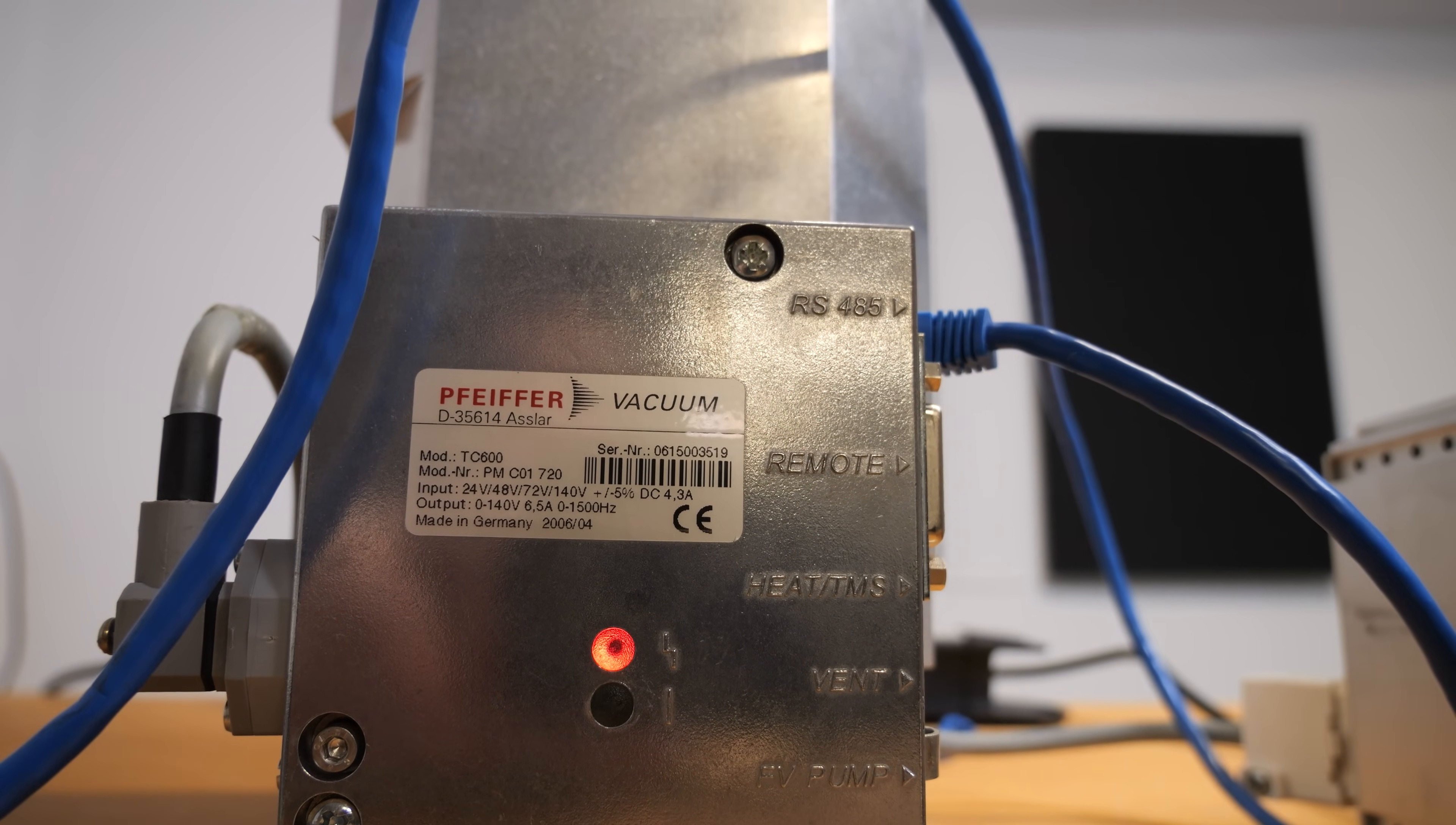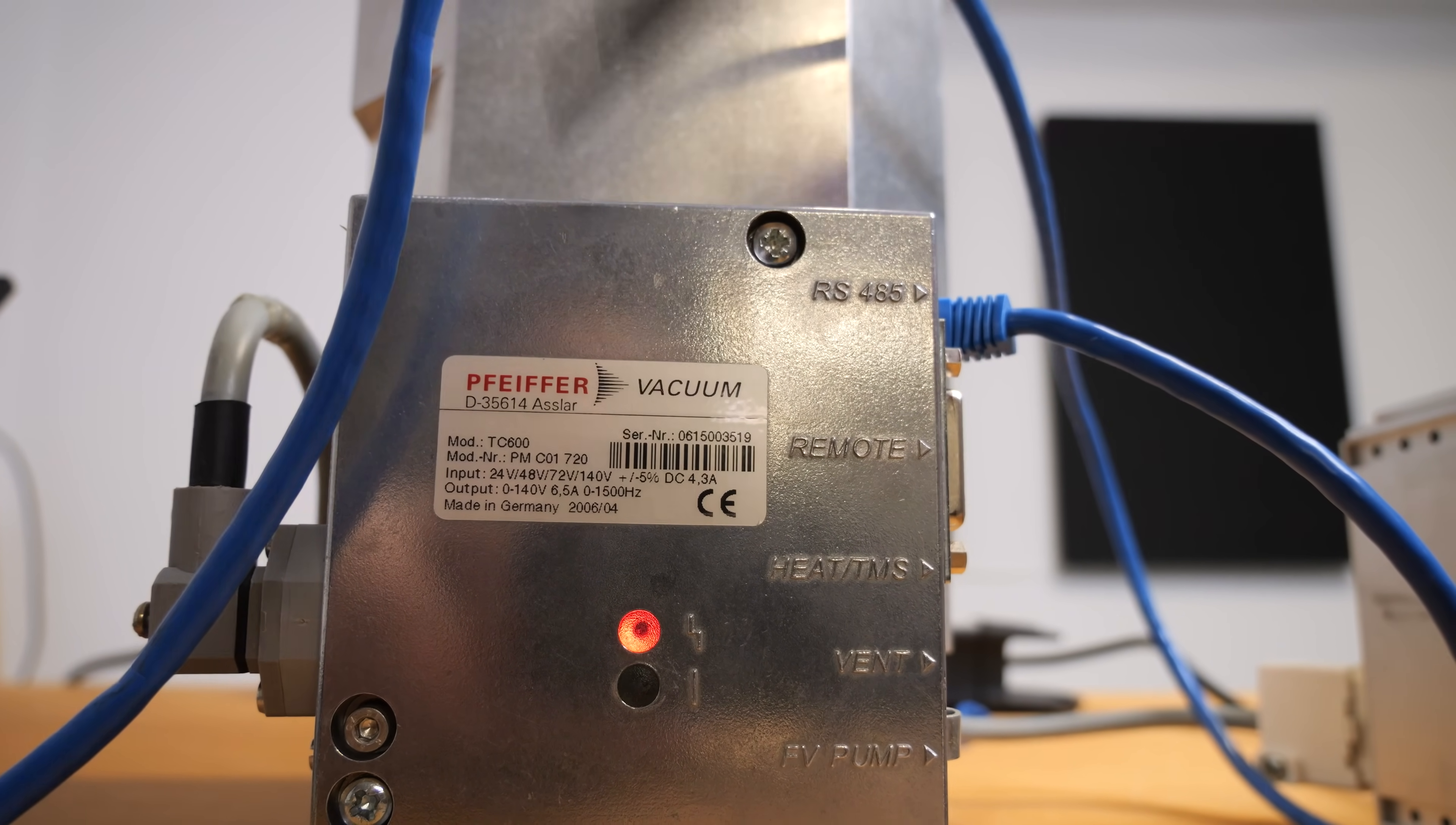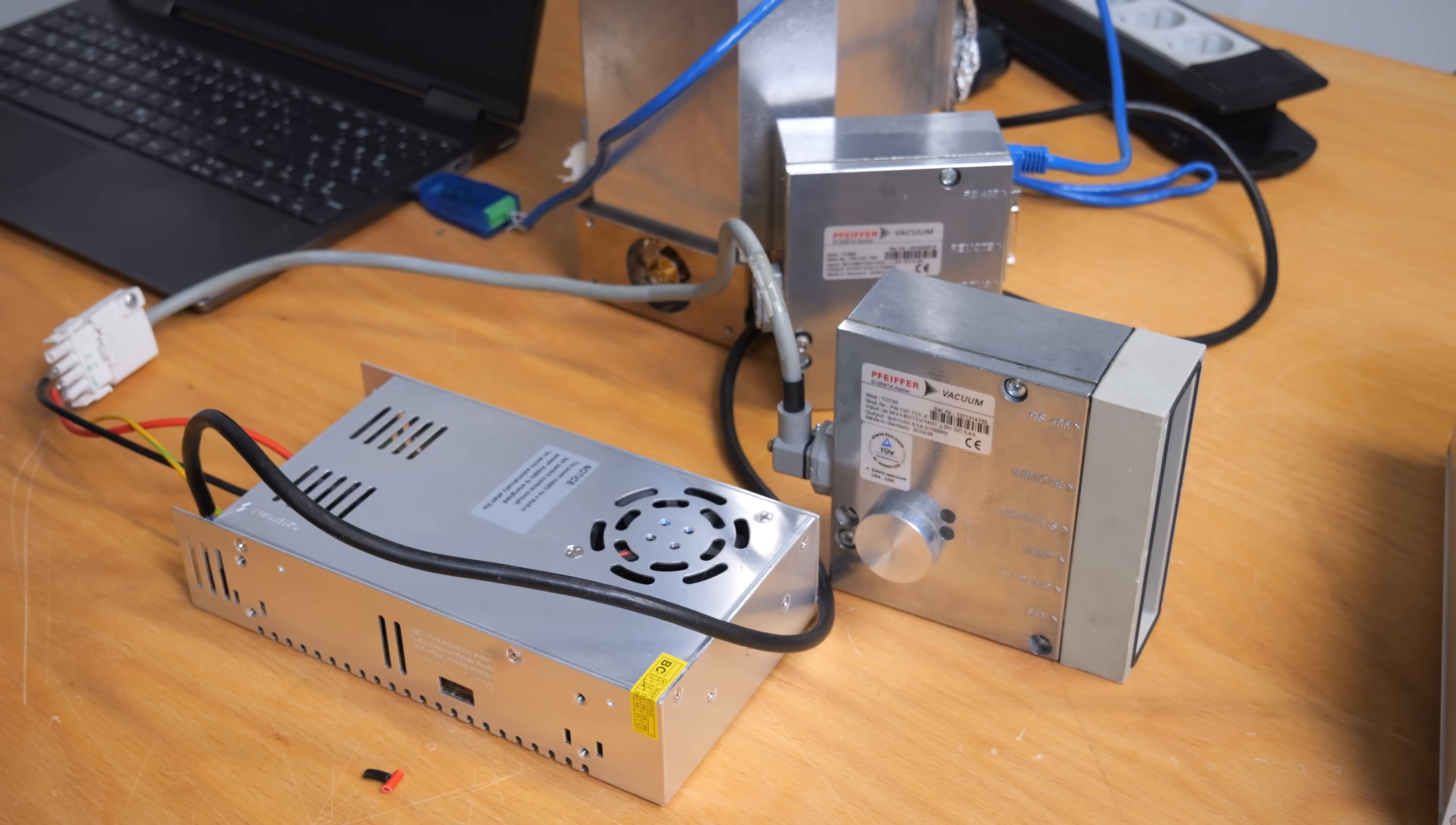Which means that the voltage provided by the power supply here is supposedly too high. And I don't quite understand that error because looking at the label of the controller, I interpret it in a way that it accepts either 24, 48, 72 or 140 volts. And the power supply I'm using right here has an output of 140 volts. I also measured it to confirm it.